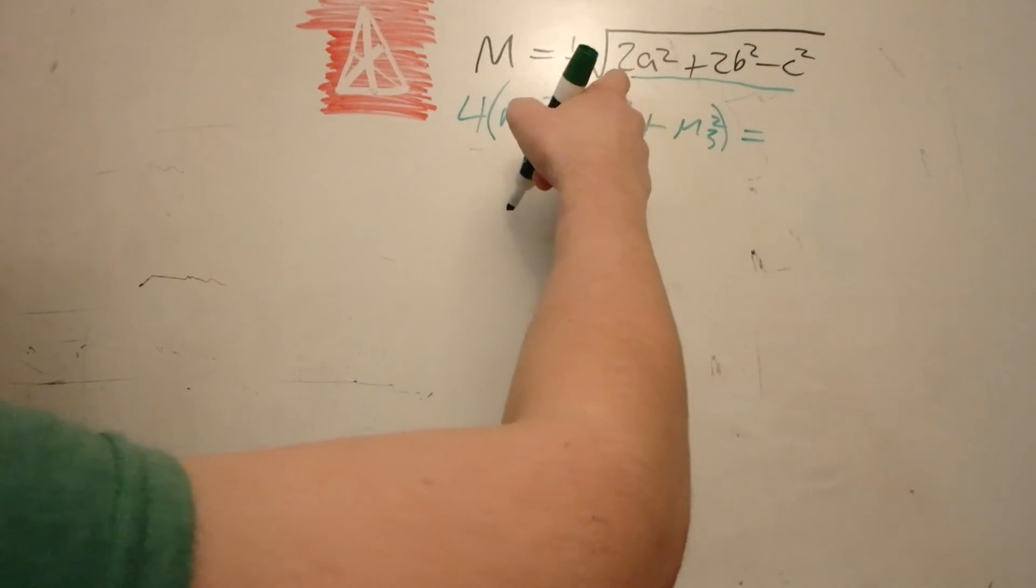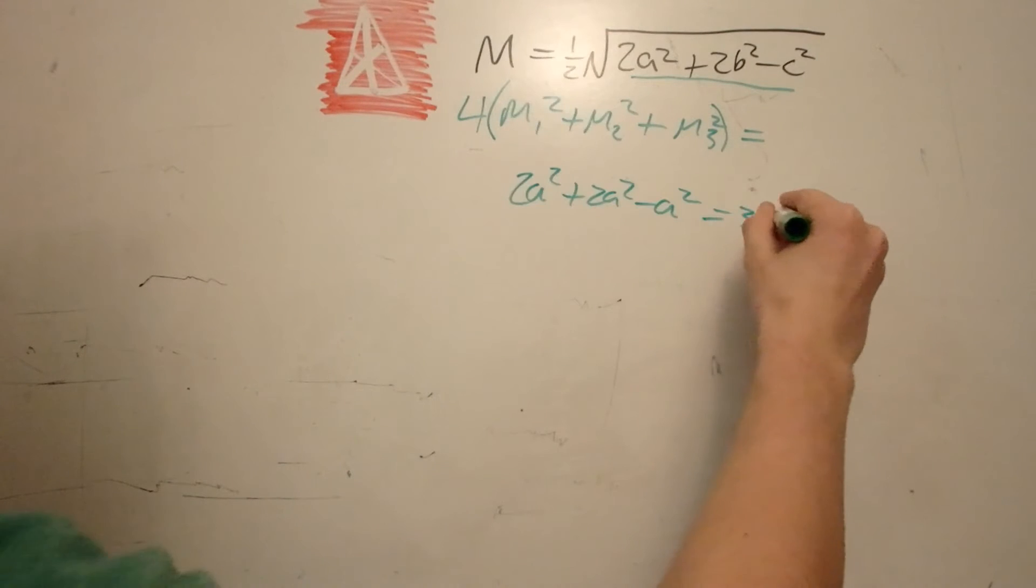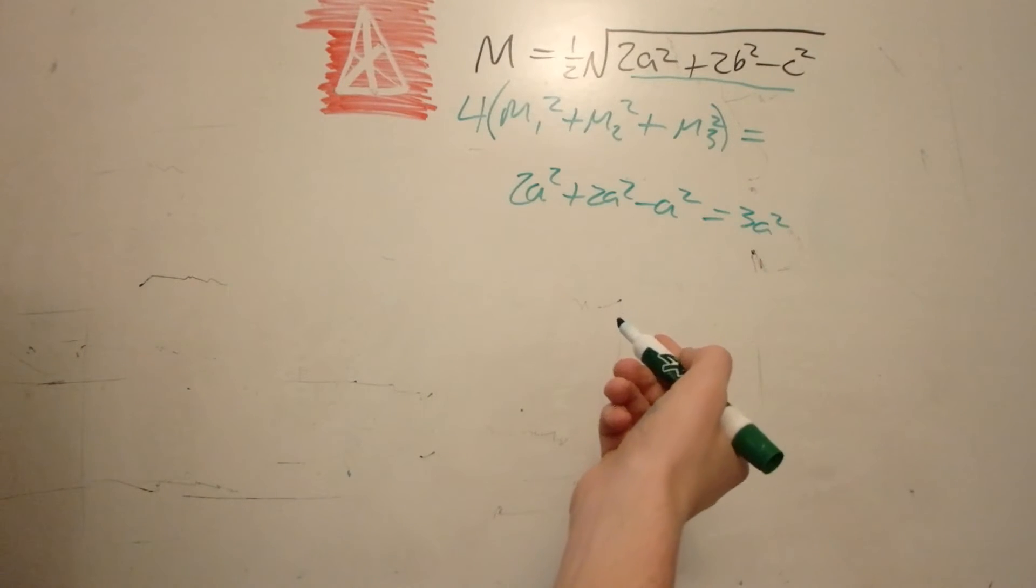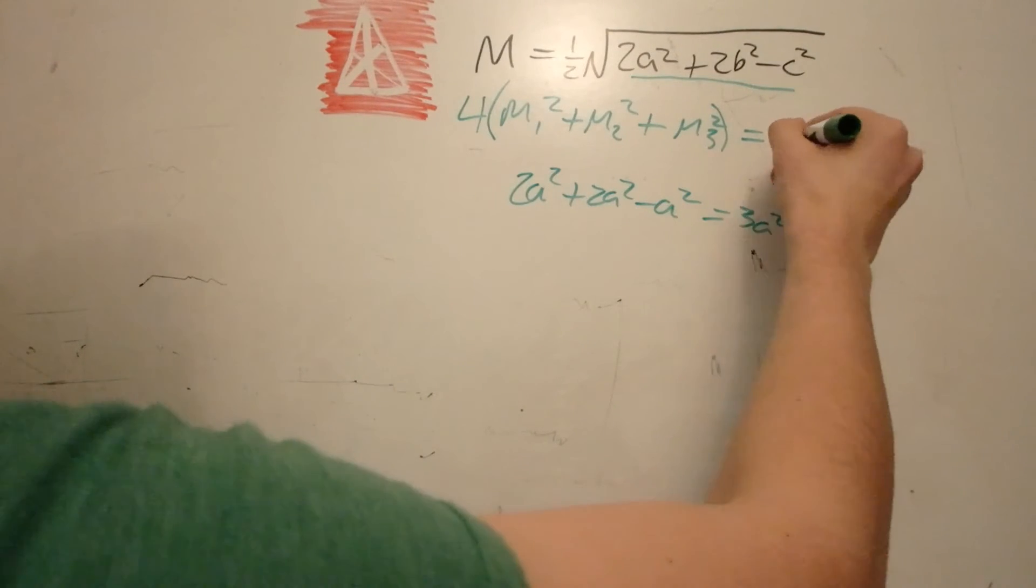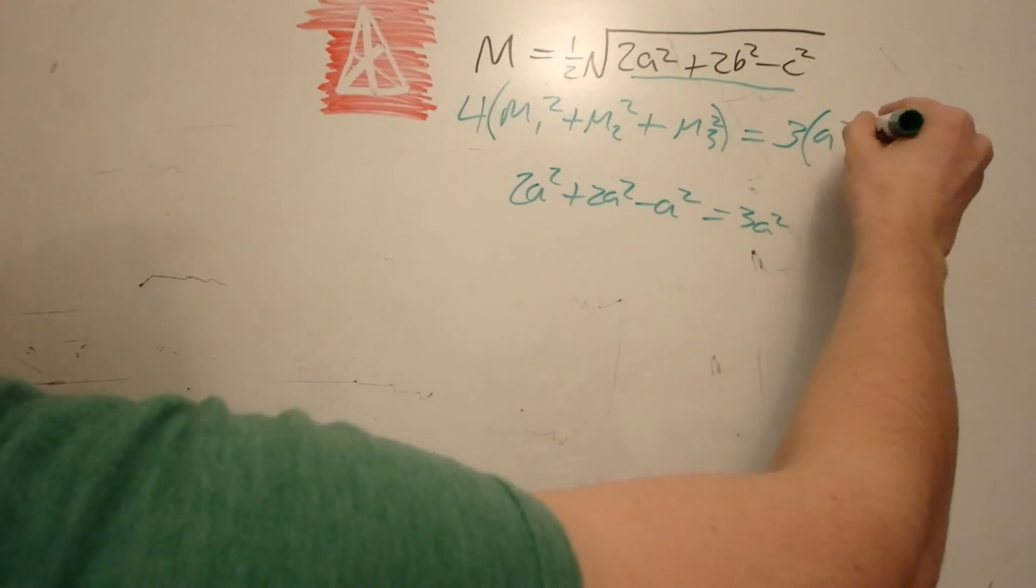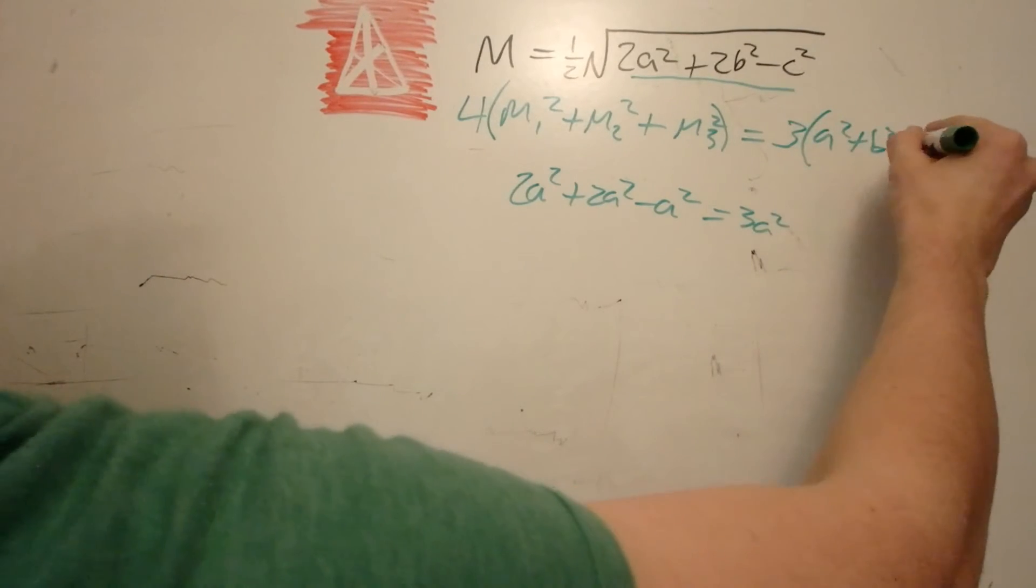So essentially, we're going to have two sets of 2a squared and one set of negative a squared equal to 3a squared. This is true for all the sides. So this can be simplified to 3a squared plus b squared plus c squared.